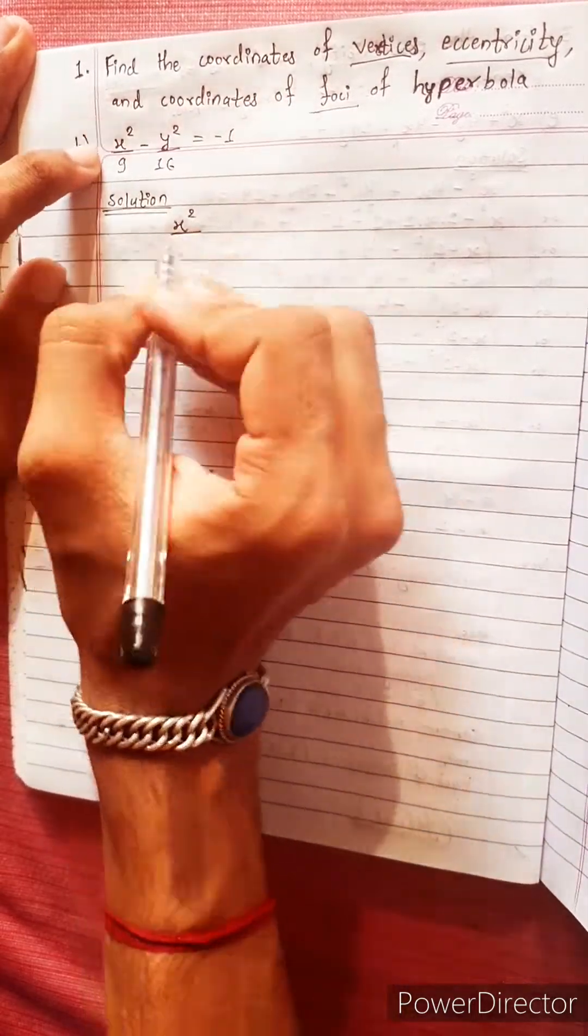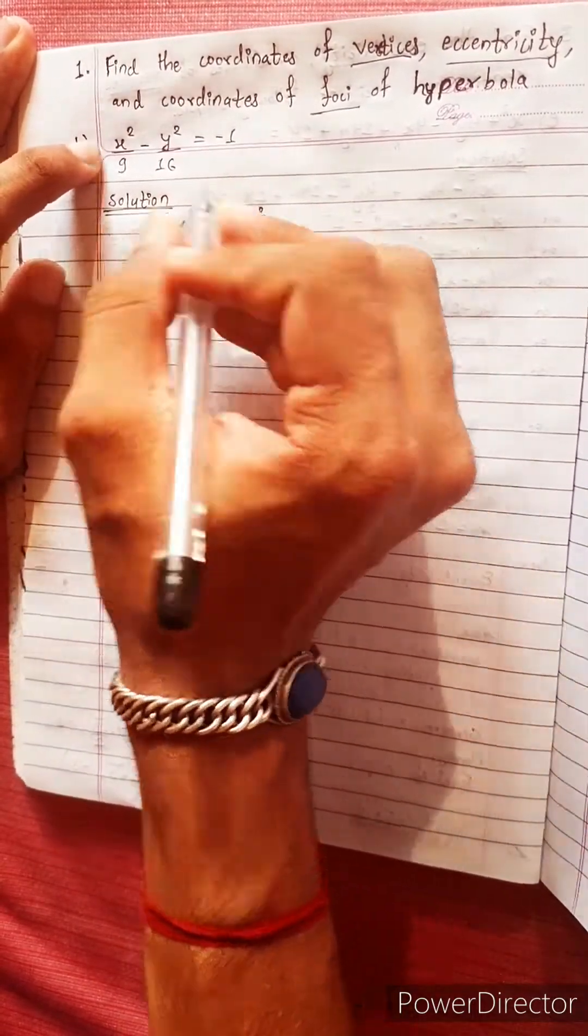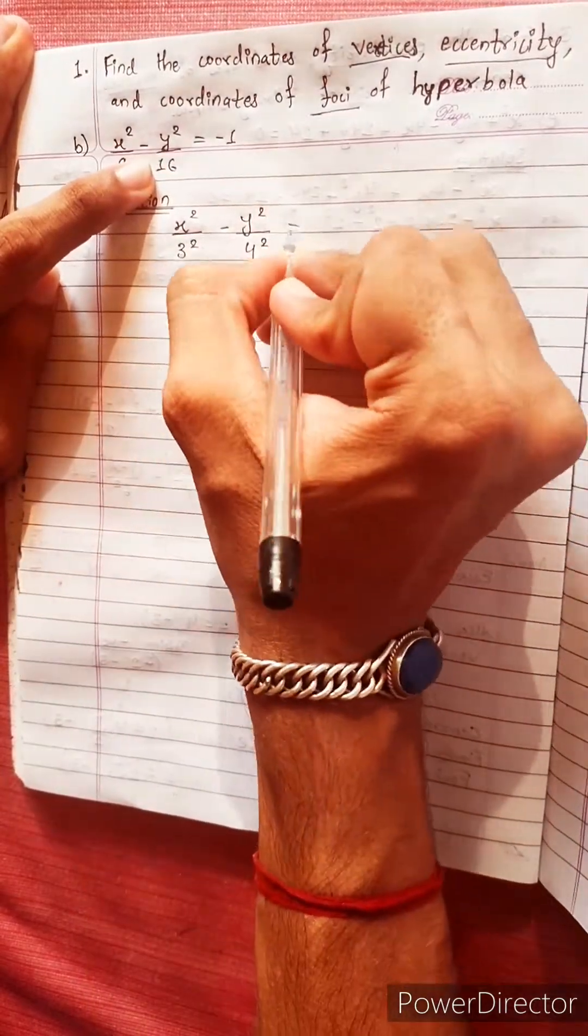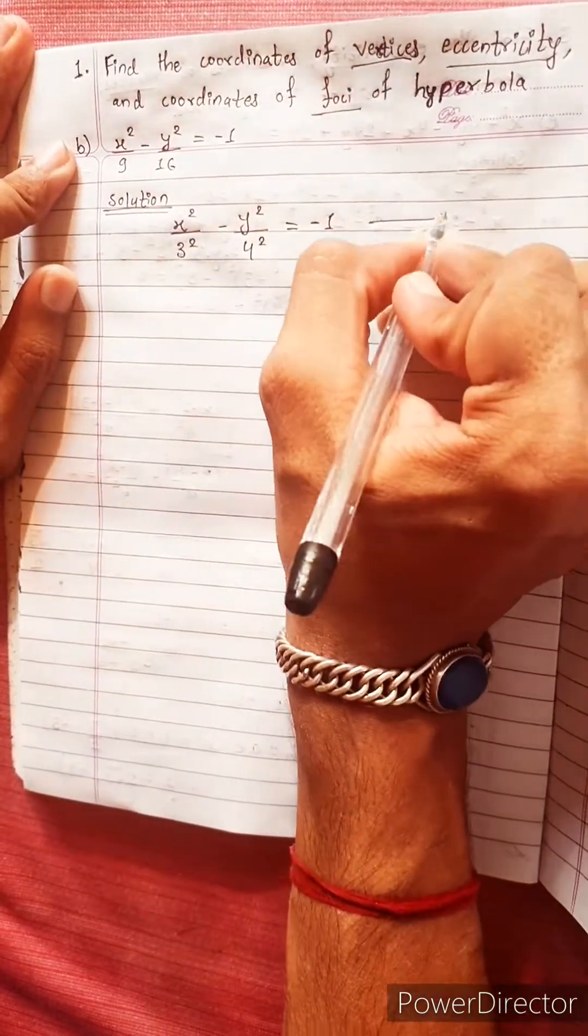x squared divided by 9 minus y squared divided by 16 equals minus 1. This formula I am going to call equation 1.